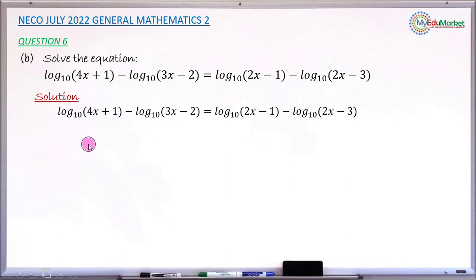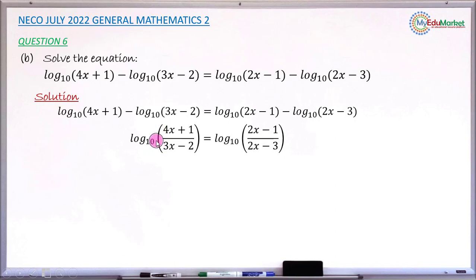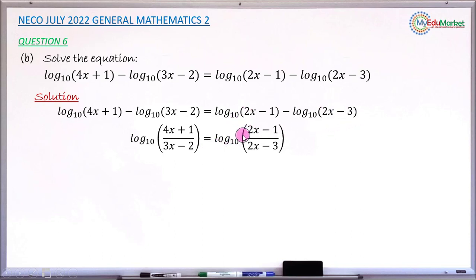Since they have the same base, log base 10 can be factored out and you now have a single log of a fraction: the first number (4x + 1) divided by the second number (3x - 2). Similarly, on the right-hand side, log base 10 of the bracket (2x - 1) divided by (2x - 3).